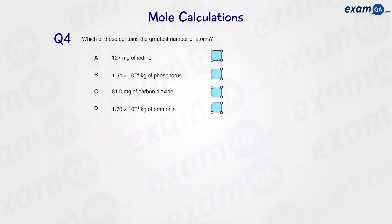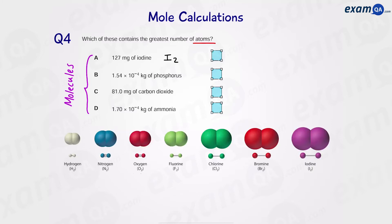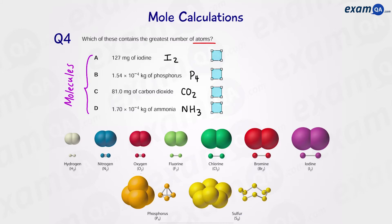Question 4: which of these contains the greatest number of atoms? Be careful — they've asked for number of atoms, but all of these (iodine, phosphorus, carbon dioxide, and ammonia) are molecules. An iodine molecule has 2 iodine atoms, since iodine is diatomic. A phosphorus molecule is P4, which has 4 phosphorus atoms. Carbon dioxide is CO2, and ammonia is NH3. Also note: phosphorus exists as P4 and sulfur exists as S8, so make sure you memorize those.